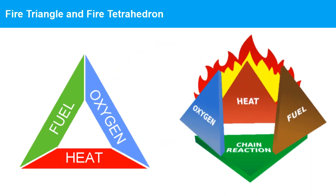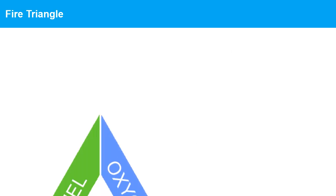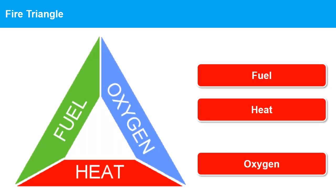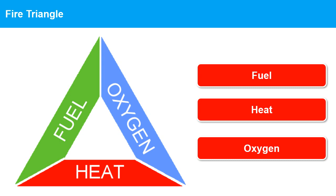The fire triangle and fire tetrahedron are both models that describe the basic elements required for a fire to occur and sustain itself. The fire triangle model identifies three elements that must be present for a fire to ignite and burn: heat, fuel, and oxygen. The heat source raises the temperature of the fuel to its ignition point, and the oxygen in the air combines with the fuel to produce a flame. Without any one of these three elements, a fire cannot start or will be extinguished.